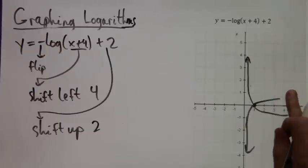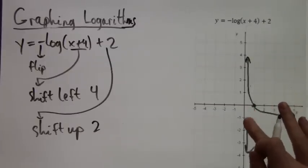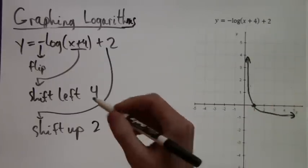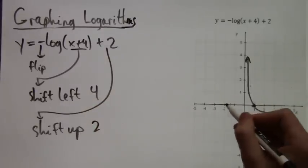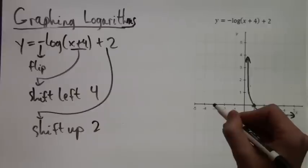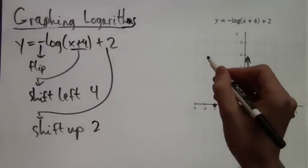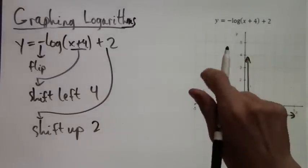This is negative log x, and that's what it looks like. So instead of starting very low on the graph, it starts very high. Instead of increasing ever so slowly, it decreases ever so slowly. Now we have to shift left four.